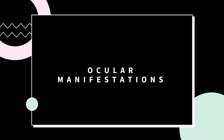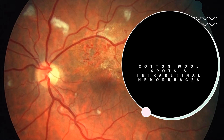Ophthalmic manifestations are common in AIDS patients. Cotton wool spots on the retina are the most common manifestation, and intra-retinal hemorrhage may be the first indication that a patient has AIDS. In this image, we see cotton wool spots in the retina, which look like wool, and intra-retinal hemorrhages.